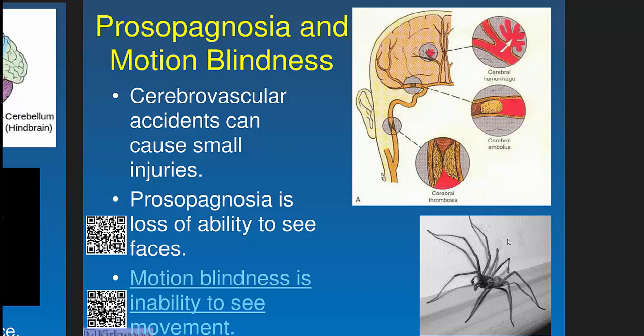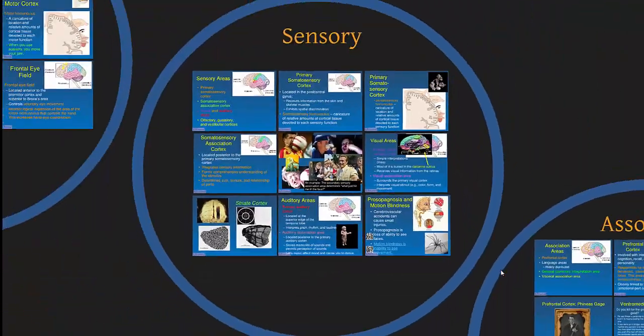Two interesting sensory lesion cases: prosopagnosia — damage to the calcarine sulcus face area causes inability to recognize faces, even though you can identify colors and objects normally. Another case is a woman from Sweden who lost the ability to see motion after a stroke — she couldn't fill a coffee cup, cross the road, or see fluid motion. She described it as like walking through a room lit by a strobe light — individual frames but no flow.